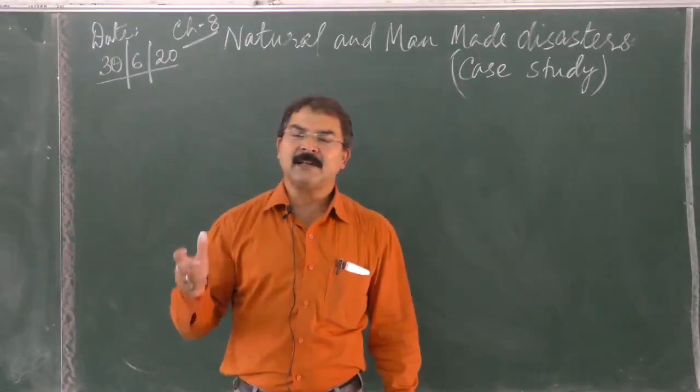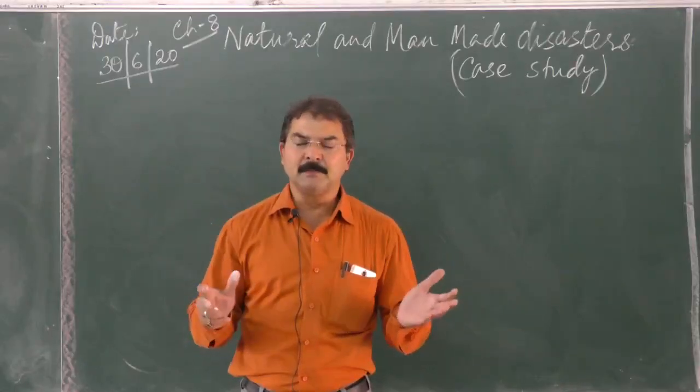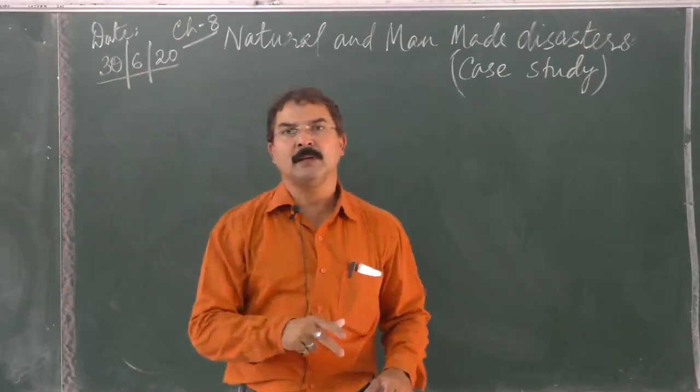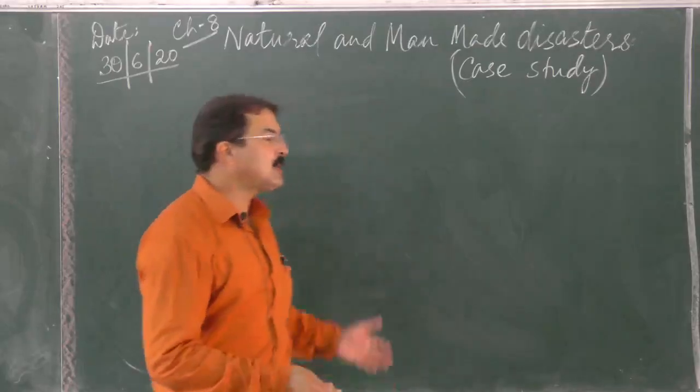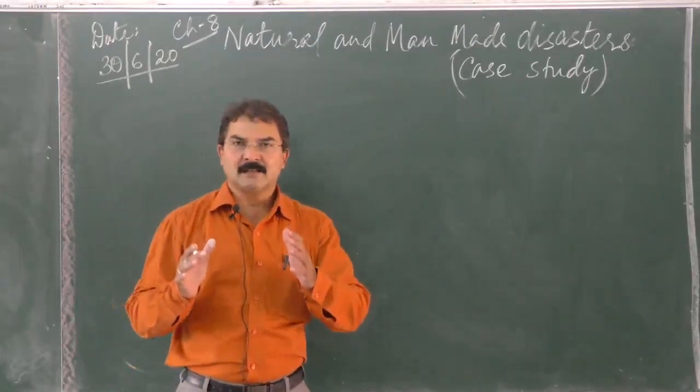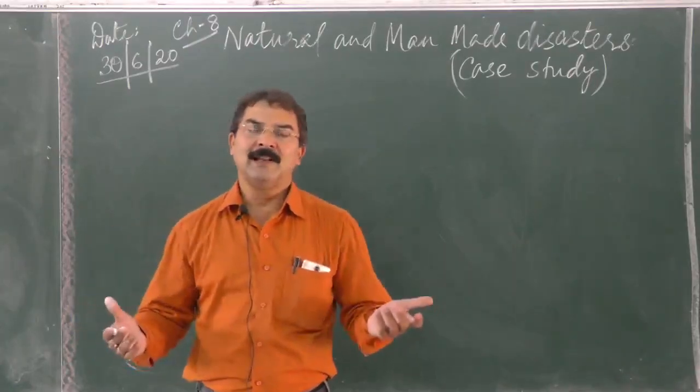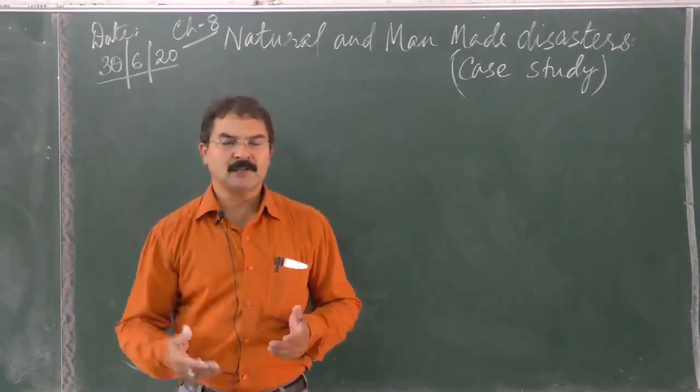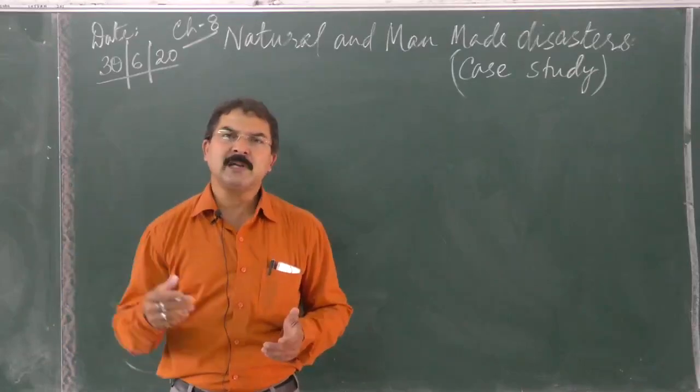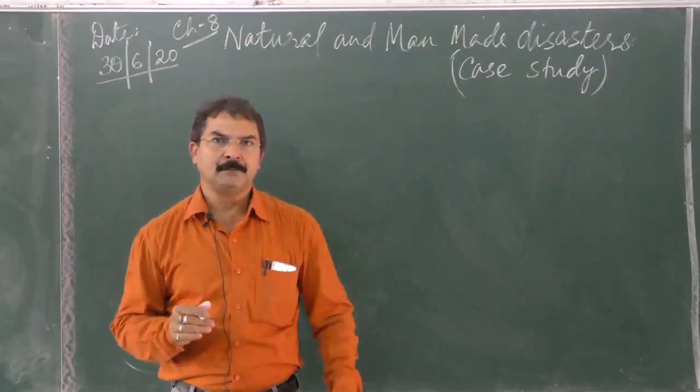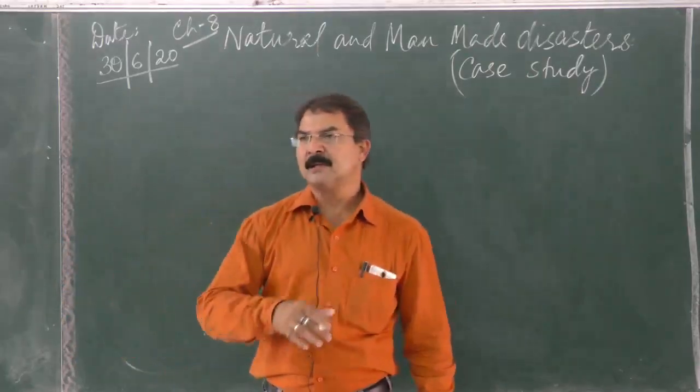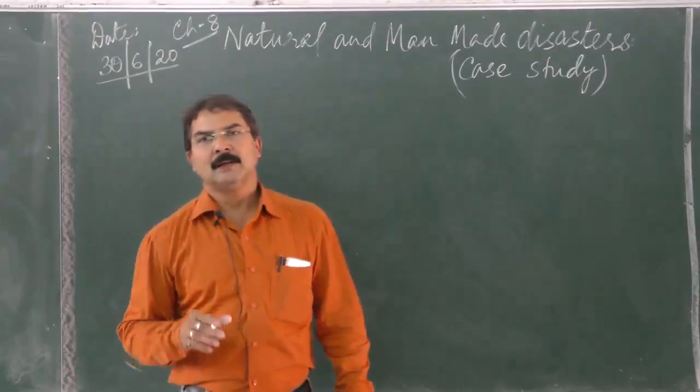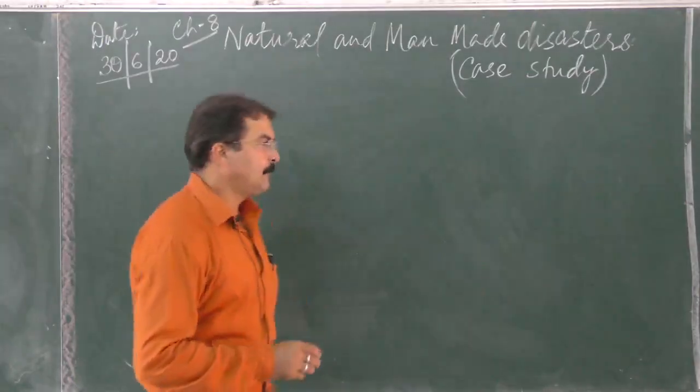Then we have landslides. In the northeastern part of India, occurrence of landslide is a very common feature. When large masses of earth roll down from the slopes of the mountain, we call it a landslide. Due to landslides, temporary dams are formed naturally that obstruct the flow of surface runoff water and small streams, impounding water in small areas and causing low-lying areas to get submerged.